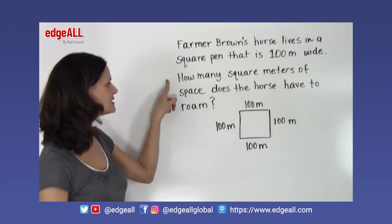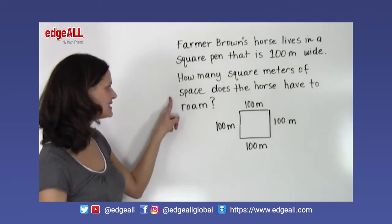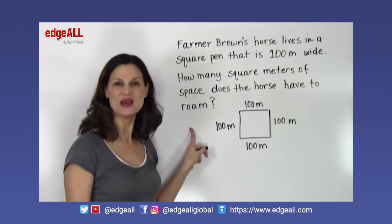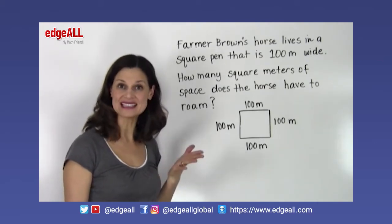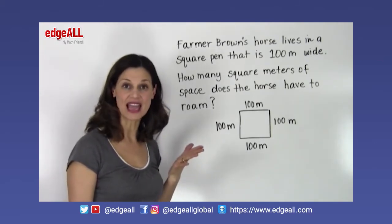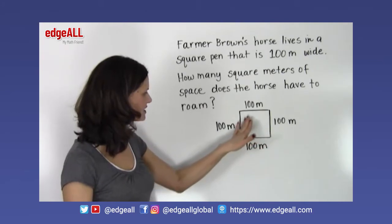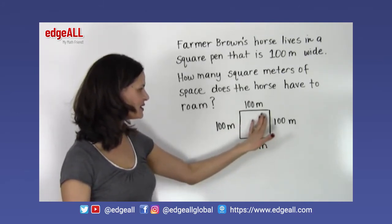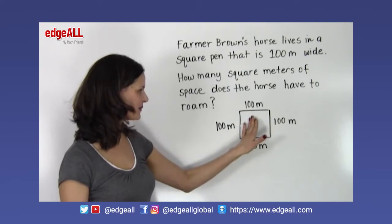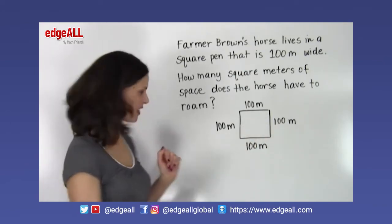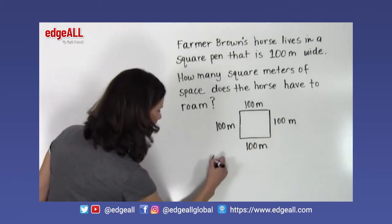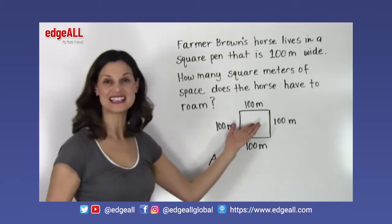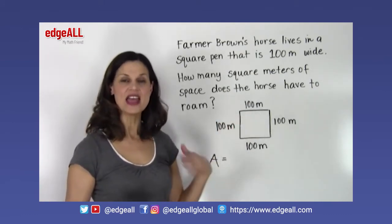The problem asks: how many square meters of space does the horse have to roam? So we need to find the area of the square — the amount of space inside it. The formula for finding the area of a square is the same as for a rectangle.